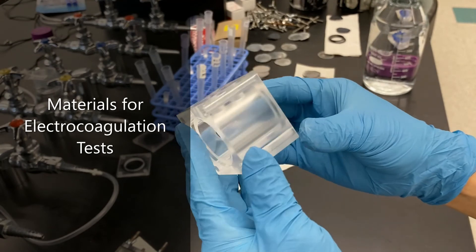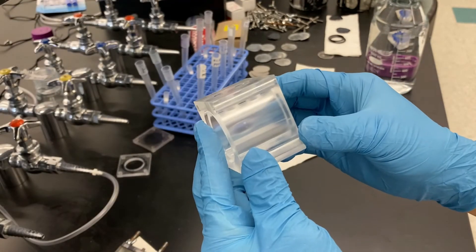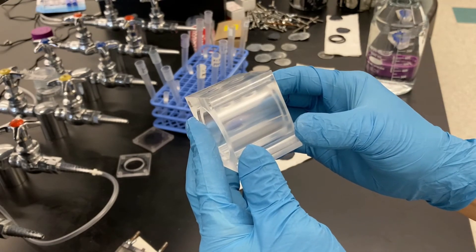This is a polycarbonate chamber for electrocoagulation experiments. You can place anode and cathode on either side of the chamber.